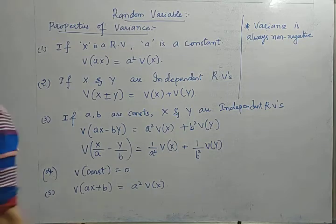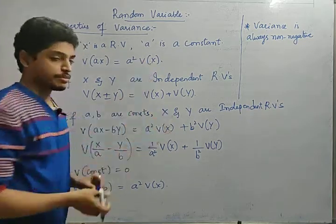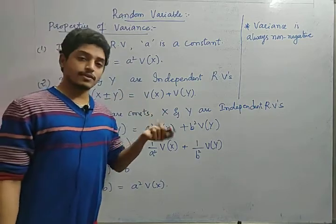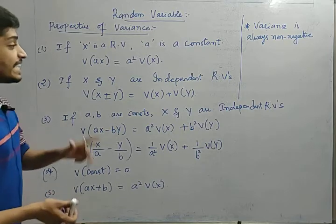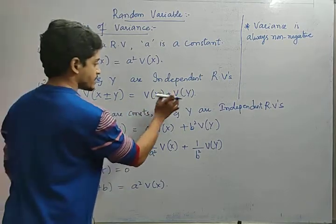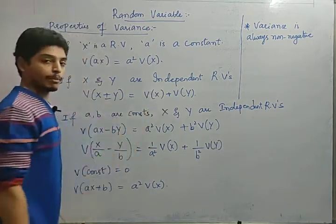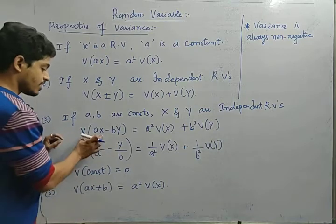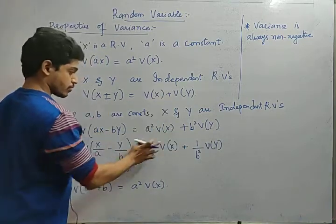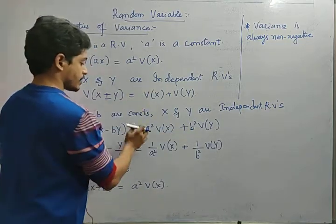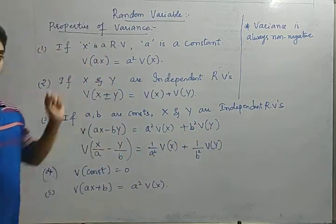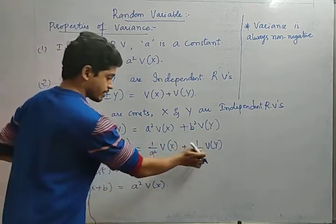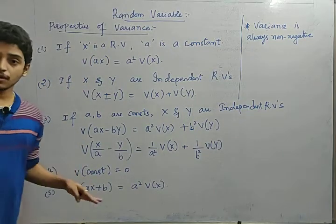Now the properties of variance. If X is a random variable and a is a constant, then Var(aX) = a² times Var(X) — note in expectation only a comes out, but in variance a² comes out. If X and Y are independent random variables, then Var(X±Y) = Var(X) + Var(Y) — even with minus, it is plus in variance. If a and b are constants and X, Y are independent, then Var(aX − bY) = a²·Var(X) + b²·Var(Y), and Var(X/a − Y/b) = (1/a²)·Var(X) + (1/b²)·Var(Y).